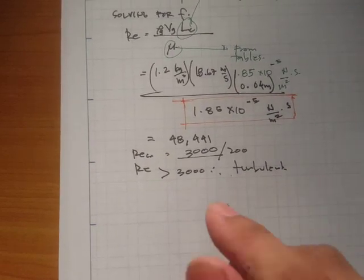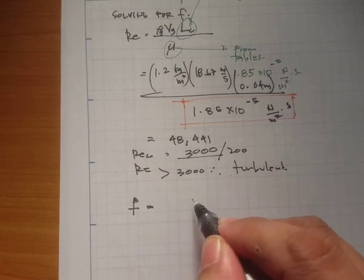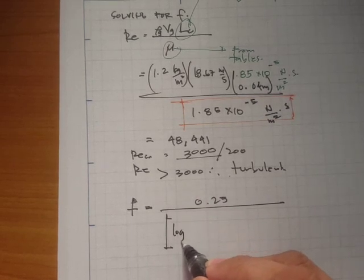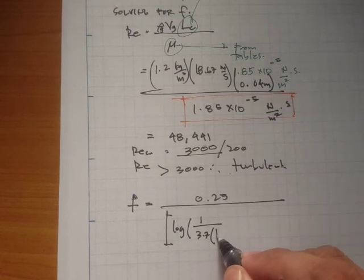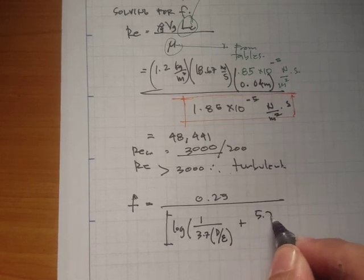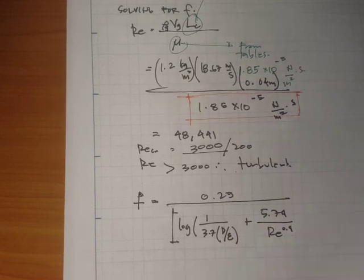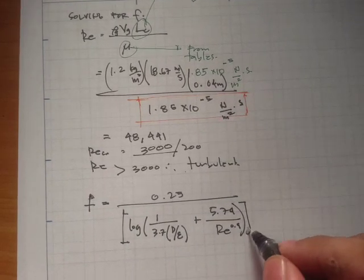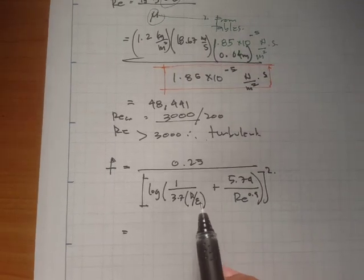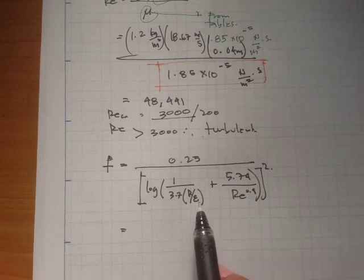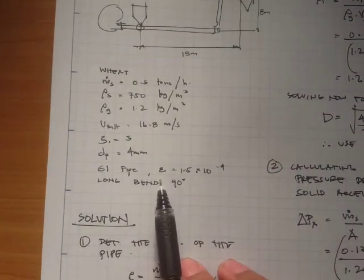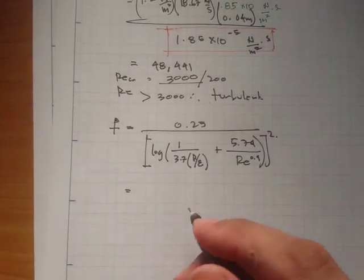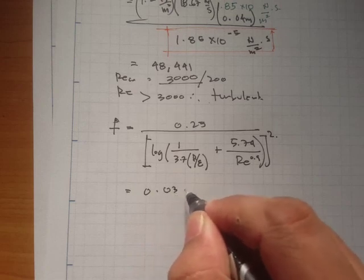Since the flow is turbulent, the friction factor is calculated using: f = 0.25 divided by the square of the logarithm of (1 over 3.7 times D/ε plus 5.74 divided by Re to the 0.9). Substituting the diameter of 0.04 m and the roughness of 1.5 × 10⁻⁴ along with the Reynolds number, the result is f = 0.0304.